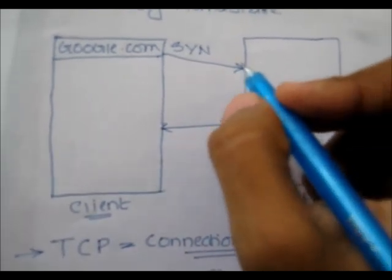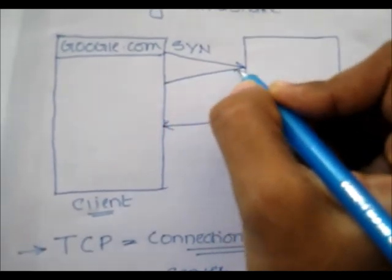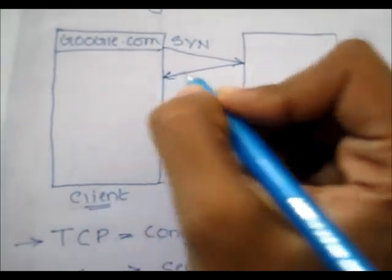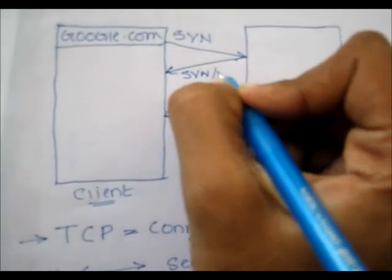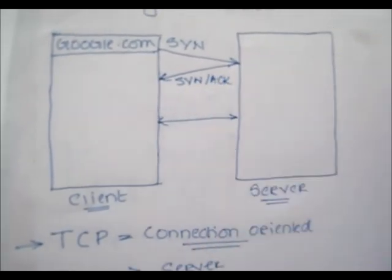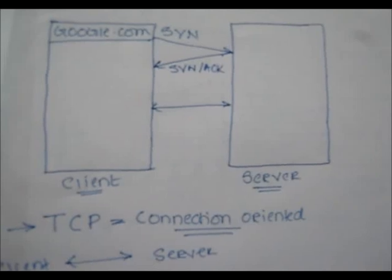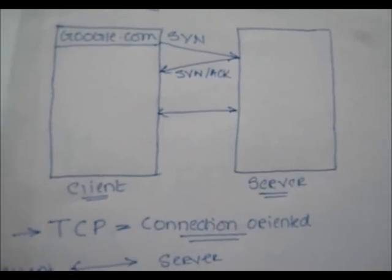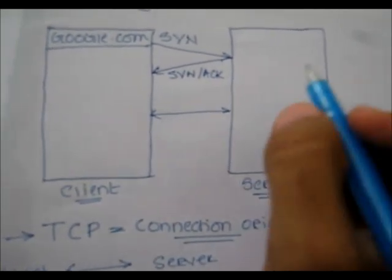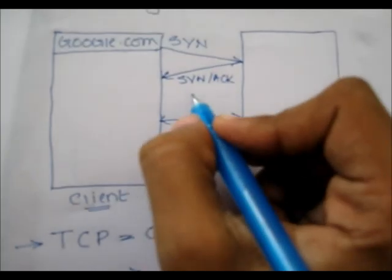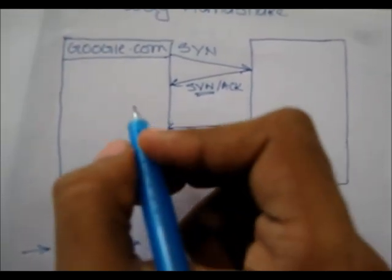After the server receives the SYN packet, with the help of the sequence number it will connect back to the client with a SYN-ACK packet. The acknowledge part means: yes, I have received the SYN packet from you with the sequence number and I am acknowledging it. And it also sends its own SYN packet with its own sequence number.